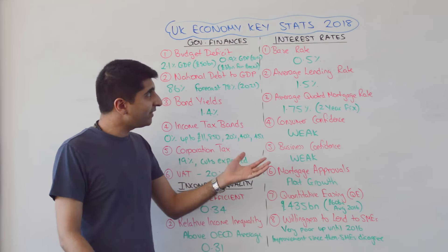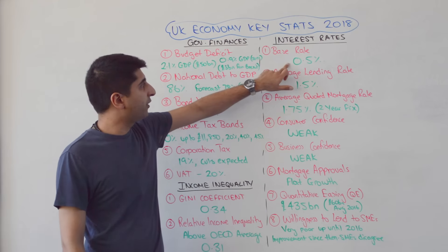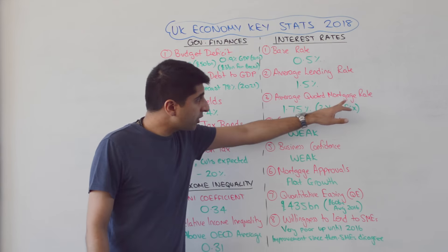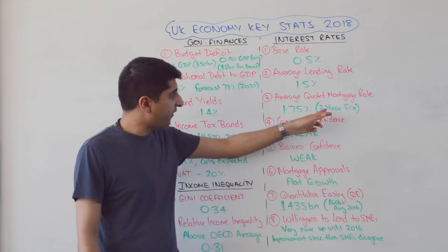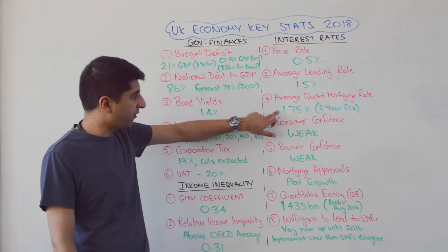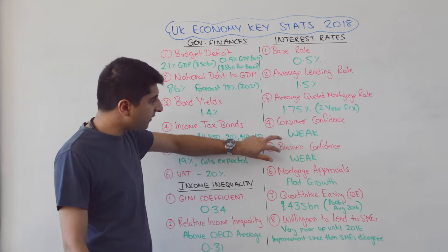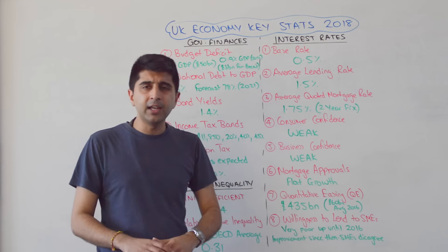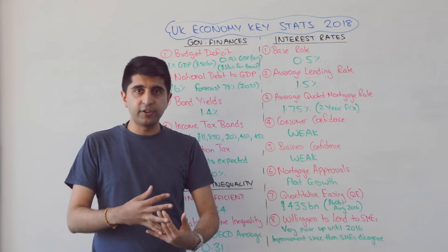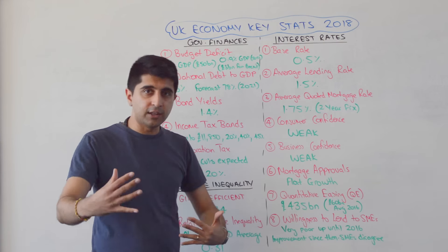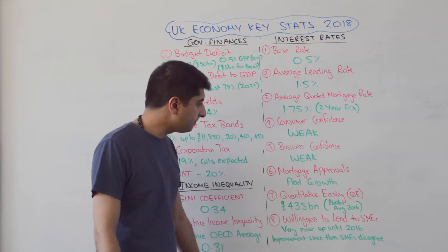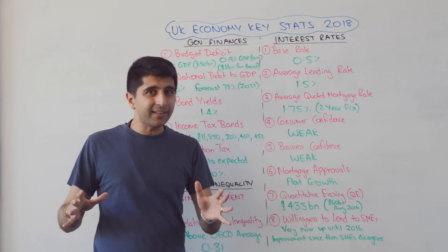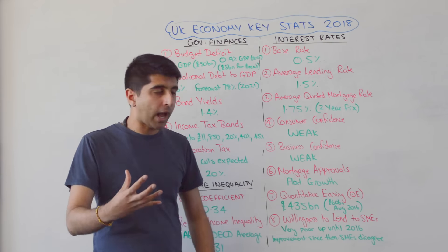Let's now talk about interest rates. The Bank of England interest rate is 0.5%. The average lending rate is also very low at 1.5%. The average quoted mortgage rate for new house buyers on a two-year fixed mortgage is 1.75%. Even though interest rates are very low, weak consumer and business confidence might reduce the impact of those low rates feeding through to higher growth. Mortgage approvals show flat growth, so the housing market is pretty stagnant, with Brexit concerns holding back new house buying.